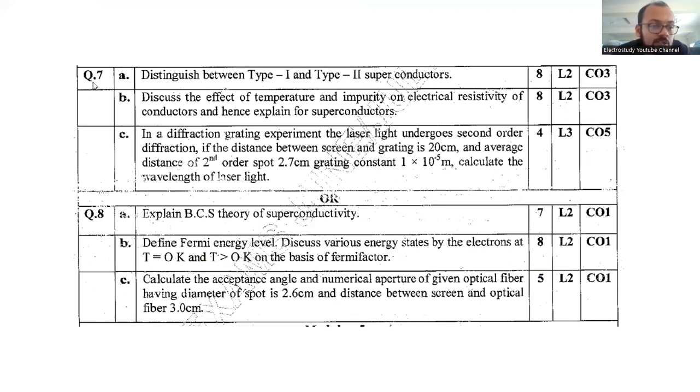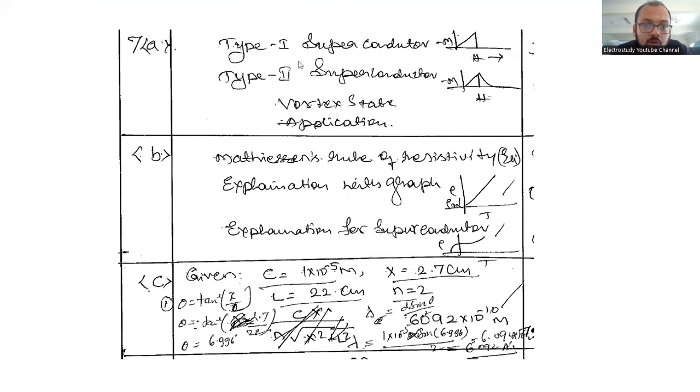In this session, I'm mainly focusing on question number 7, which comes from module number 4. Moving on to the discussion: distinguish between type 1 and type 2 superconductors.